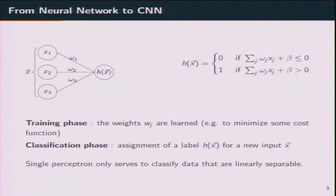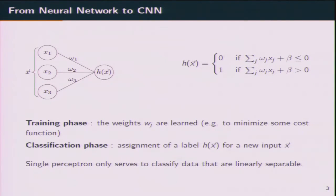As you can see in the picture on the left, each coordinate is associated with a weight W_j. During the training phase, this weight is learned using gradient descent. Each neural network has two phases: a training phase followed by a classification phase. During the classification phase, you assign an output for a new input X by applying perceptron rules — a linear combination between the weight W_j and the coordinates of X — then checking if this combination is greater than or less than a certain threshold.